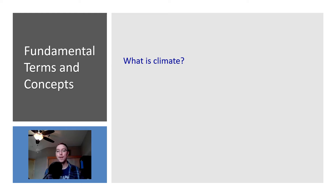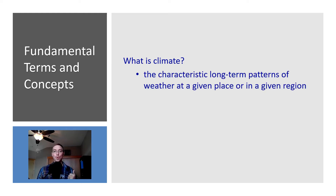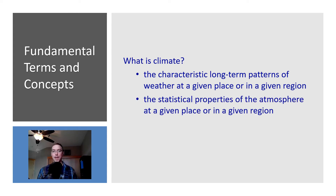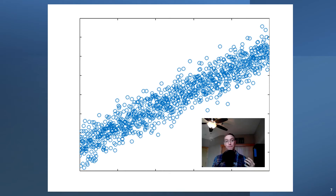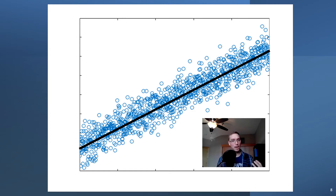What is climate? Well, it is the characteristic long-term pattern of weather at a given place or in a given region, or the statistical properties of the atmosphere at a given place or a given region. Whereas weather might be a dot on a graph — a recording of the temperature, the amount of precipitation, the trajectory of a storm — climate is the trend. It's the trend line.